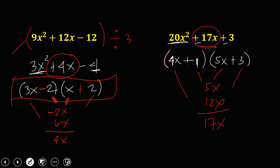So this is the correct factoring of the fourth quadratic trinomial. That's how you find the factors of a quadratic trinomial using the trial and error factoring method.